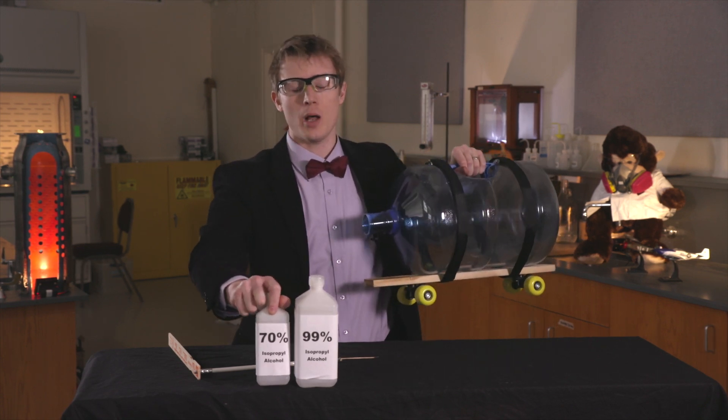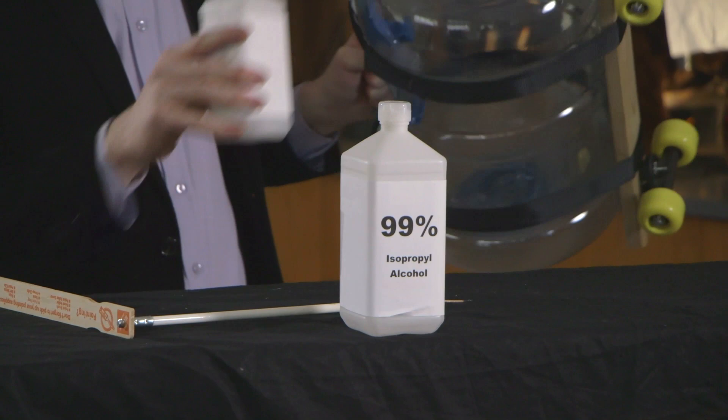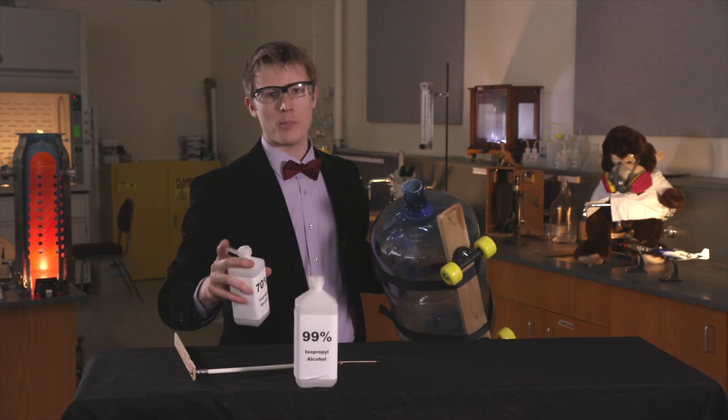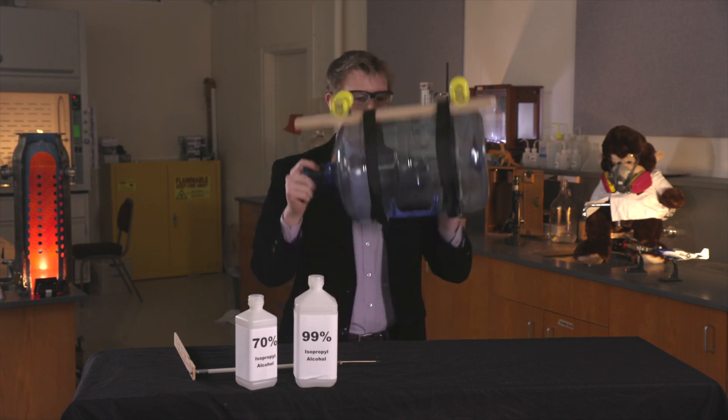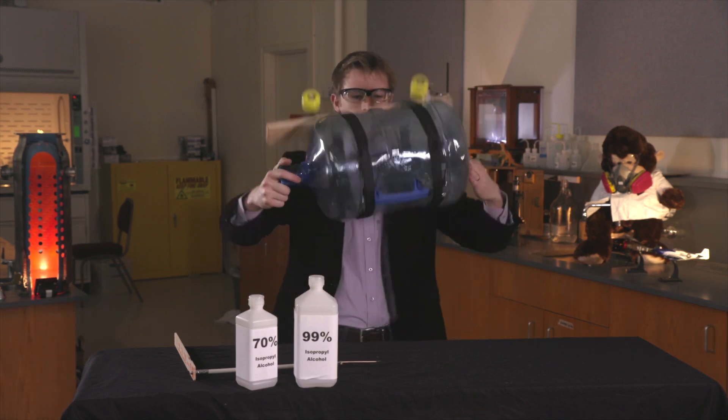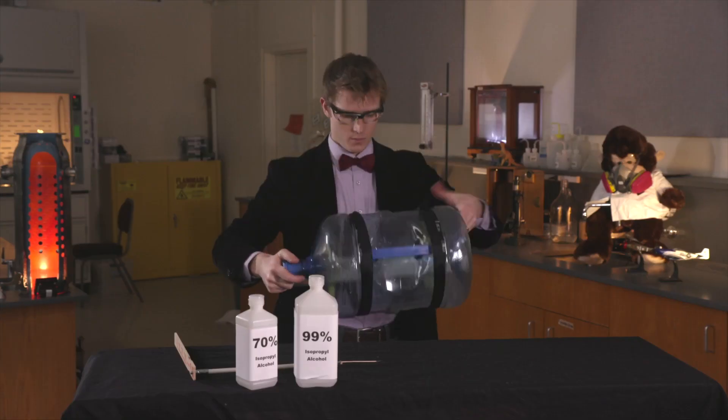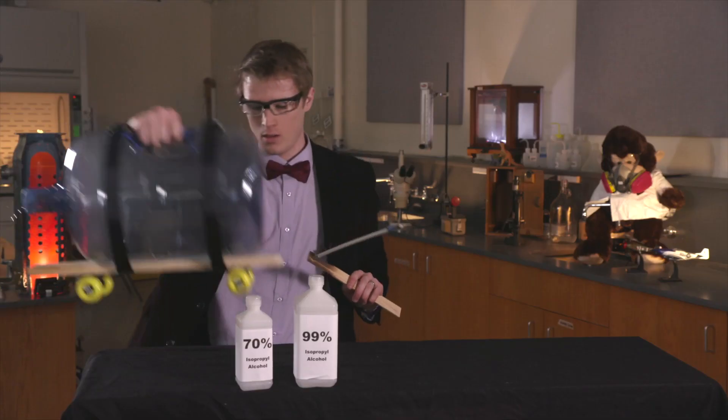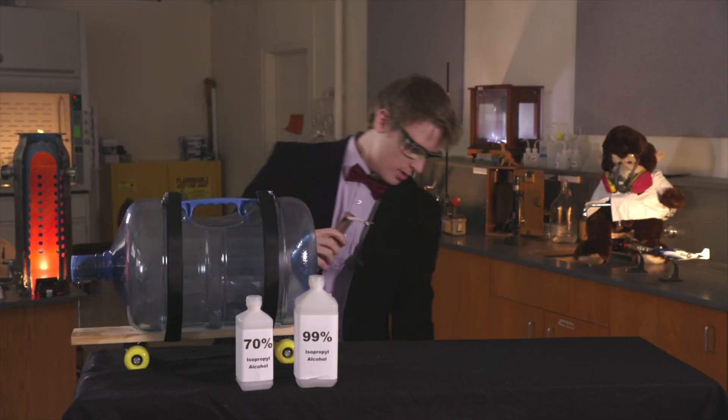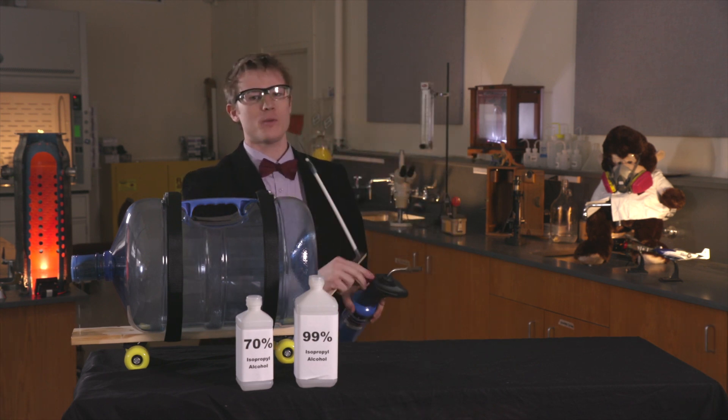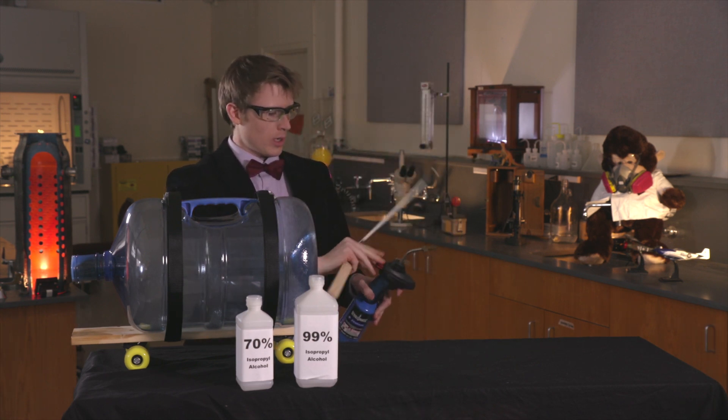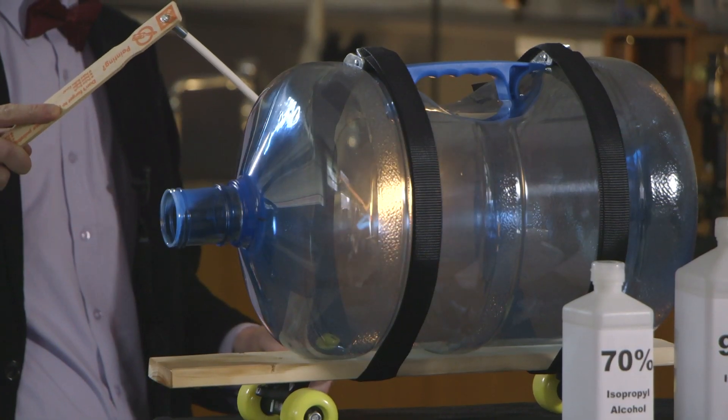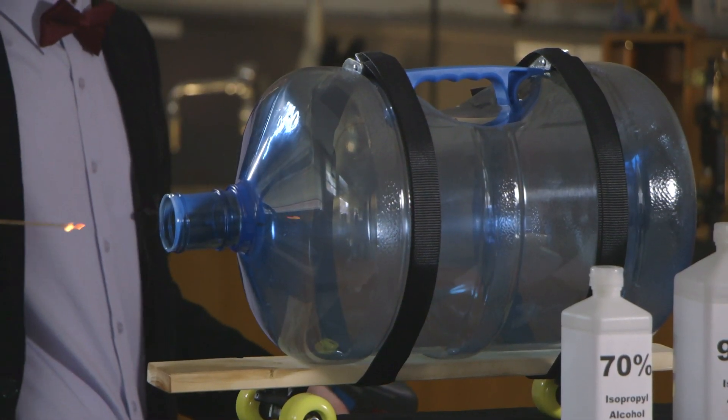Just like before, I'm going to mix the 70% isopropyl alcohol with the air in the bottle so that we can ignite it and simulate the inside of a jet. All right, let's try this again. So in this case, I'm using the 70% isopropyl alcohol and we expect to see a bit of a different flame. Fire in the hole!